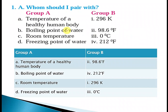Question number 1: Match the pairs. A. Temperature of healthy human body — answer is 98.6 Fahrenheit. B. Boiling point of water — answer is 212 Fahrenheit. C. Room temperature — 296 Kelvin. D. Freezing point of water — 0 degree Celsius.